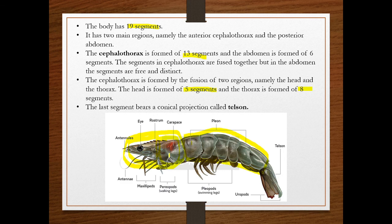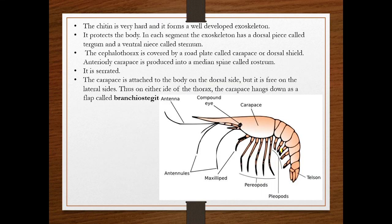The carapace is produced into a spine-like structure in the forward direction — this is called the rostrum. At the posterior end, it ends with a pointed structure called the telson or tail. The whole exoskeleton is made up of a polysaccharide called chitin, which is hard and forms a well-developed exoskeleton that protects the body.